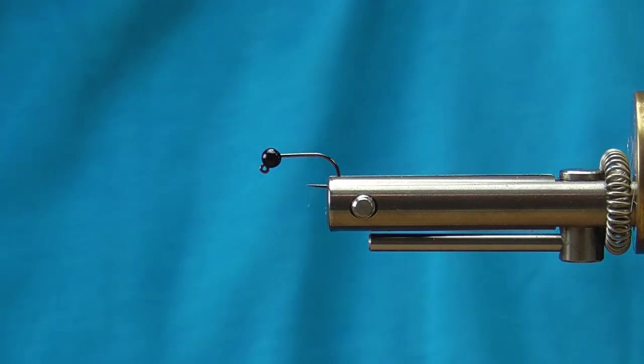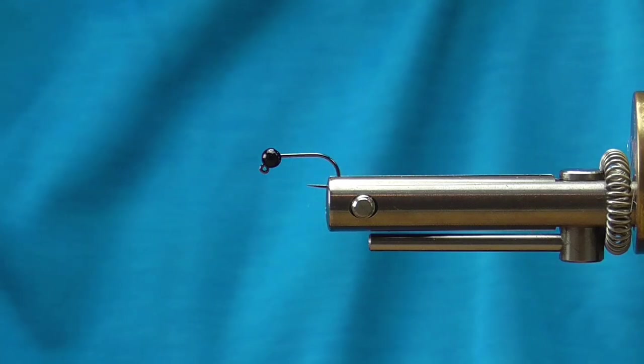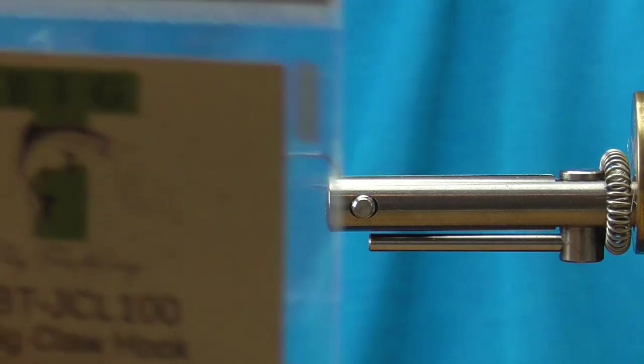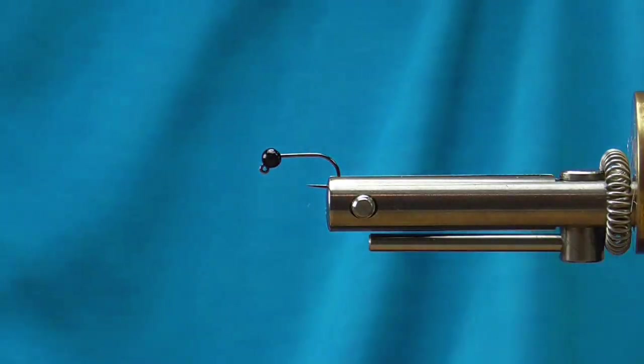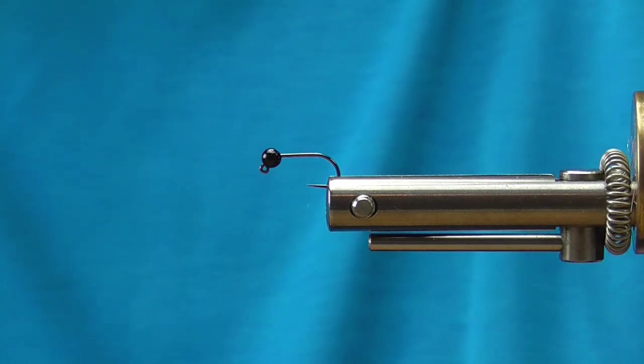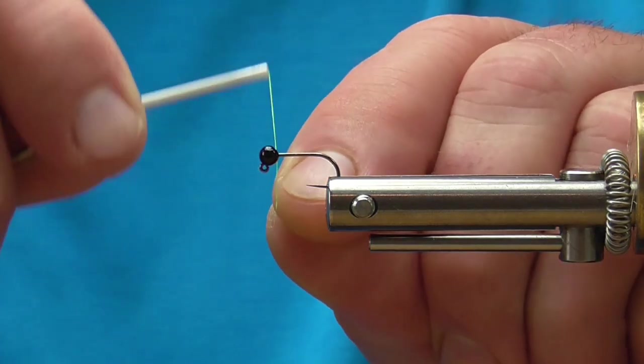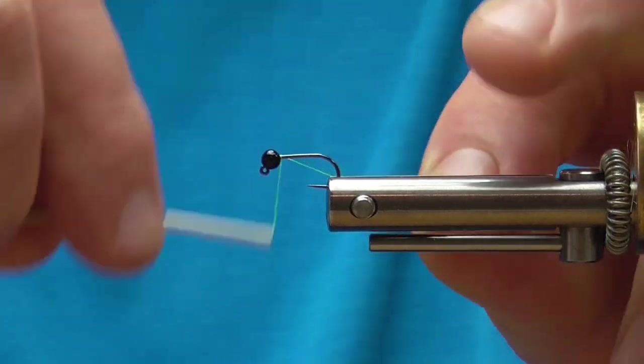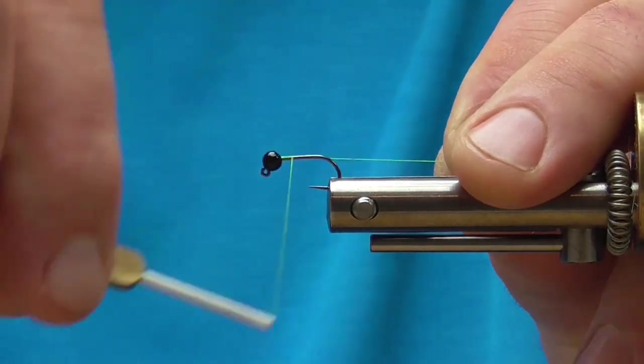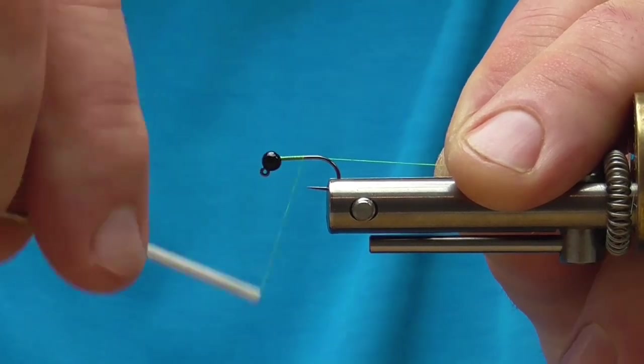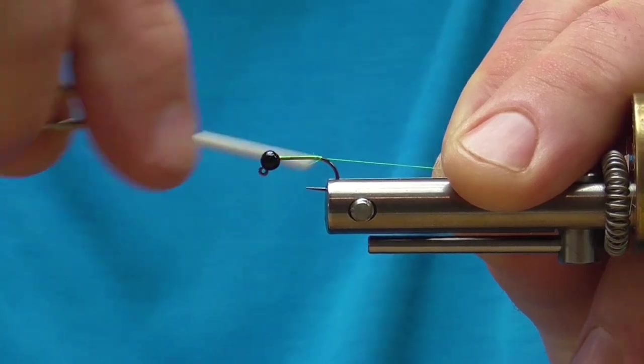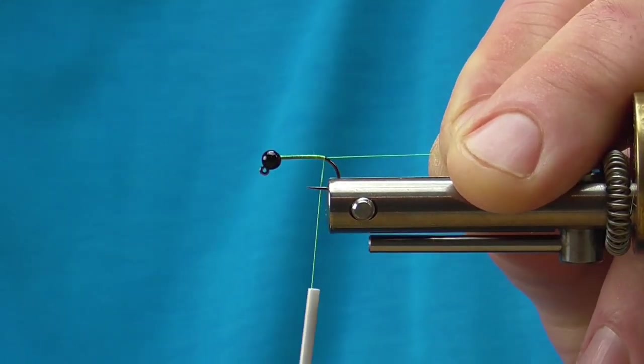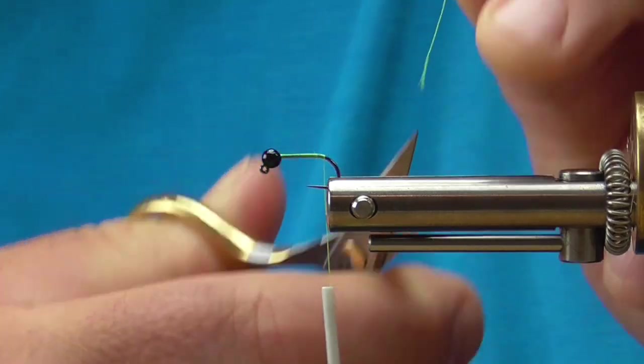So what we're going to do is start with a size 12 jig claw hook and a glossy black three and a half millimeter bead. I'm going to start wrapping thread right behind the bead, this is a 70 denier chartreuse, and wrap that to the bend of the hook. This is a good little anchor fly if you're Euro-nymphing.